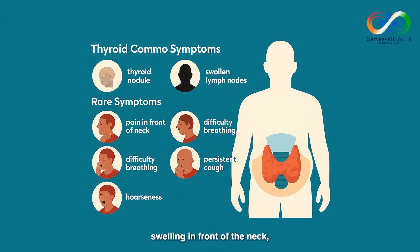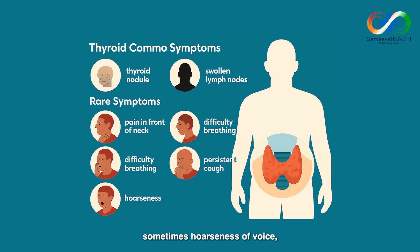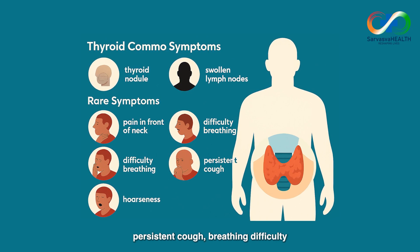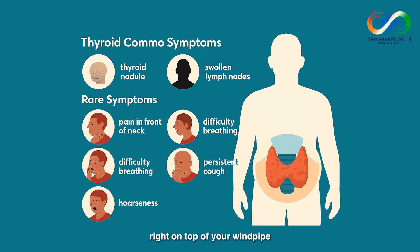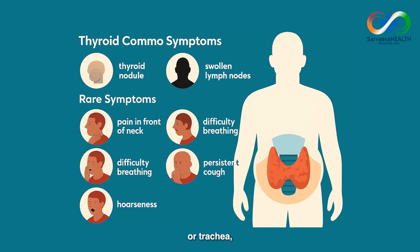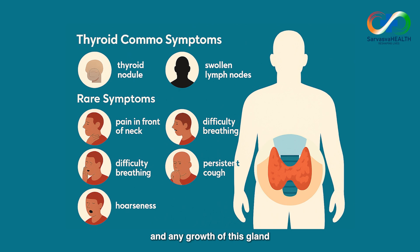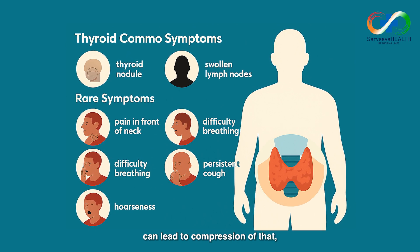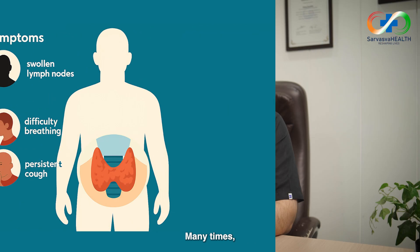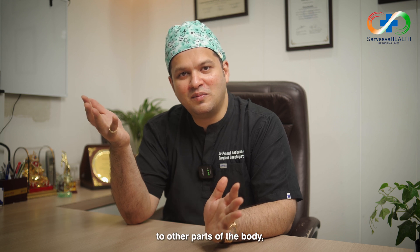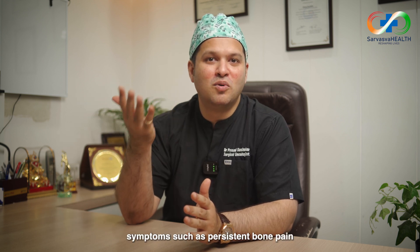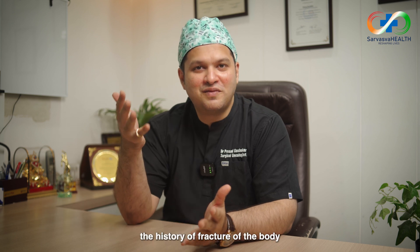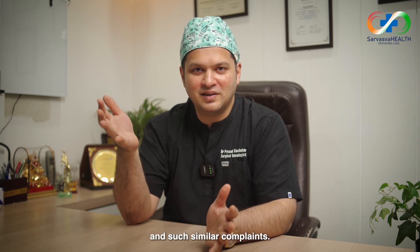In advanced cases, thyroid cancer can present as a large swelling in front of the neck, sometimes with hoarseness of voice, persistent cough, or breathing difficulty, because the thyroid gland lies right on top of the windpipe or trachea. Any growth of this gland can lead to compression of the trachea, causing these problems. If the cancer spreads to other parts of the body, it can present with symptoms such as persistent bone pain or fractures.